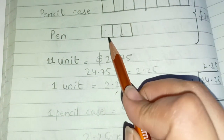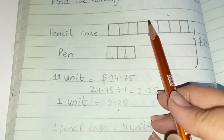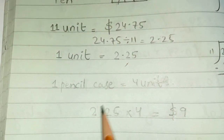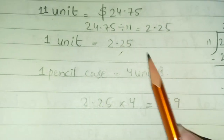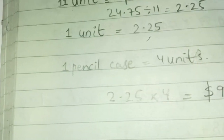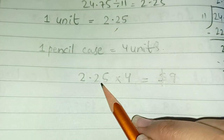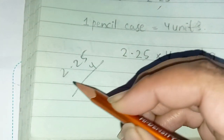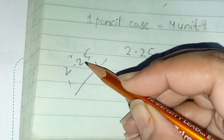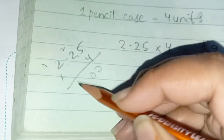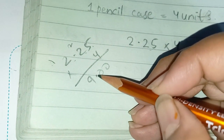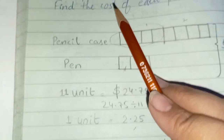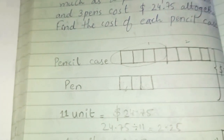One unit is $2.25. A pencil case has 4 units, so the cost of each pencil case is 4 × 2.25 = $9.00. The cost of each pencil case is $9.